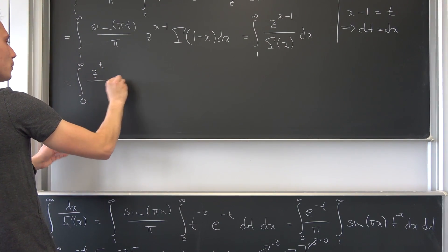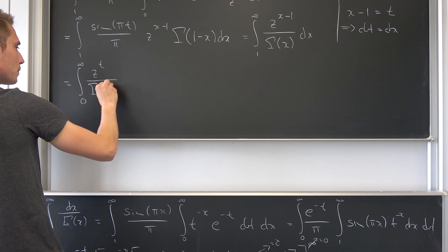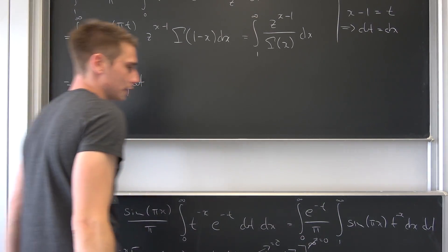Then this overall means that dt is nothing but dx. We also know that x is nothing but t plus one. Leaving us with, if we plug one into here, it runs from zero to infinity, z to the t power over gamma of t plus one, integrated with respect to t.